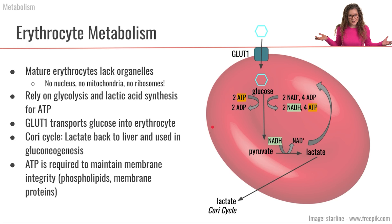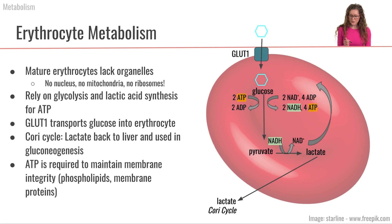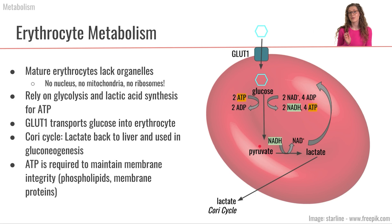So how can erythrocytes get ATP without mitochondria? Erythrocytes are going to rely on the lactic acid system. The way the lactic acid system works is glucose will go through glycolysis down to pyruvate, because we can produce a net two ATPs in the process of glycolysis.